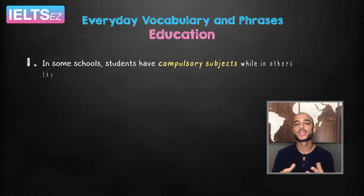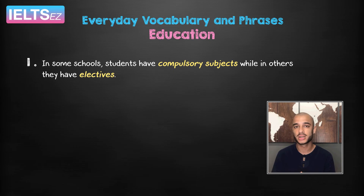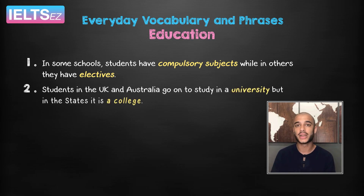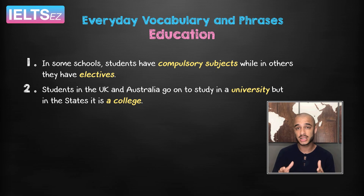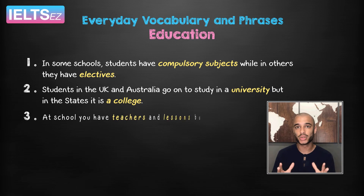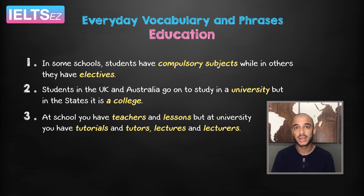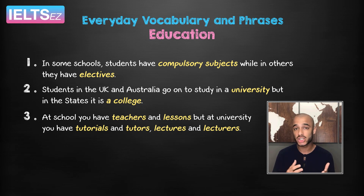In some schools, students have compulsory subjects while in others they have electives. Two: students in the UK and Australia go on to study in a university, but in the States it is a college. Three: at school, you have teachers and lessons, but at university you have tutorials and tutors, lectures and lecturers.